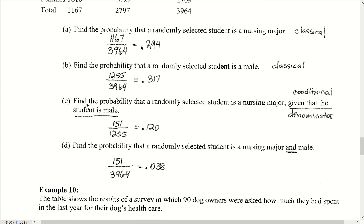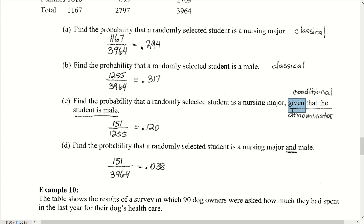The next example asks: find the probability that a randomly selected student is a nursing major given that they are a male. This is very important as we move into the end of the section and into 3.3. The keywords are critical — whether it says 'given,' 'and,' or just 'probability' — because that tells us how to proceed. In this case, the word 'given' makes it a conditional probability.